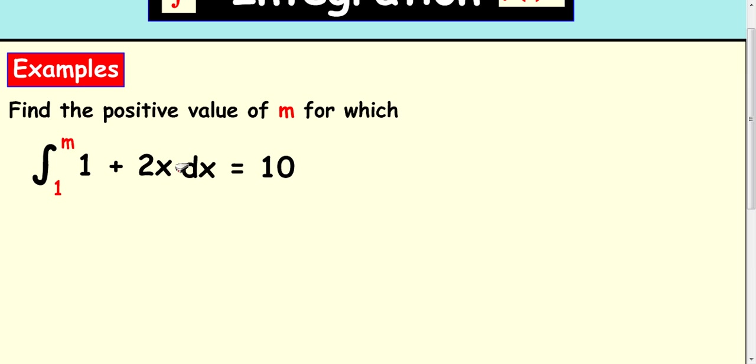So if we integrate 1 plus 2x with respect to x, 1 becomes x. And this is really to the power of 1, so you add 1 to the power, which is 2, and divide. So that will become x².